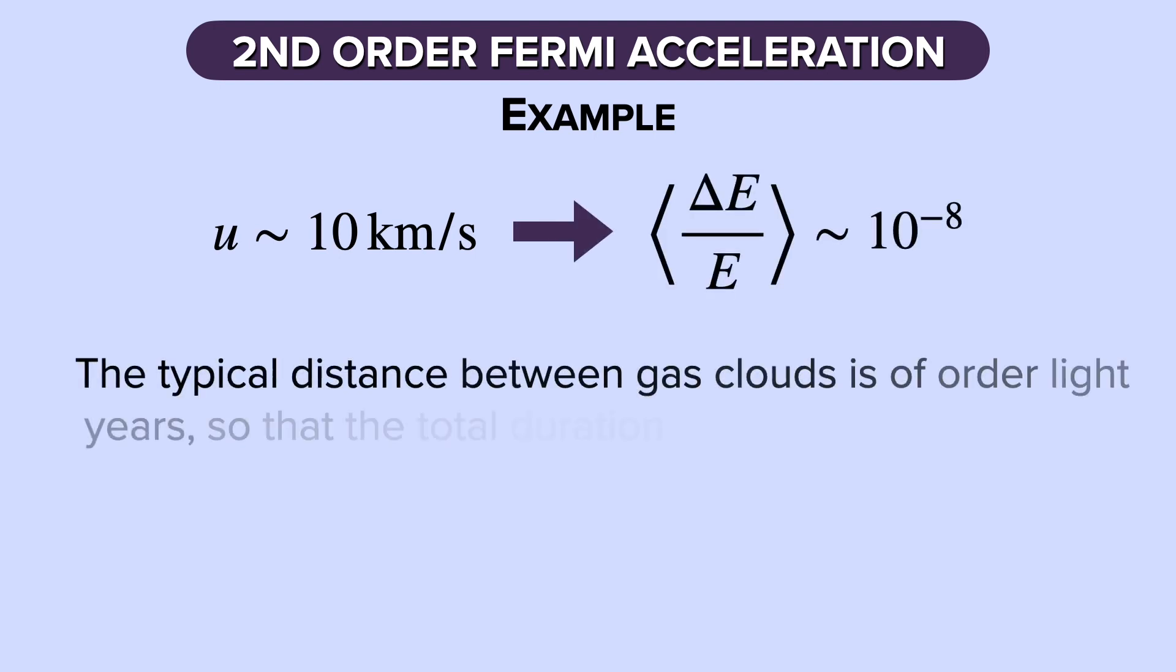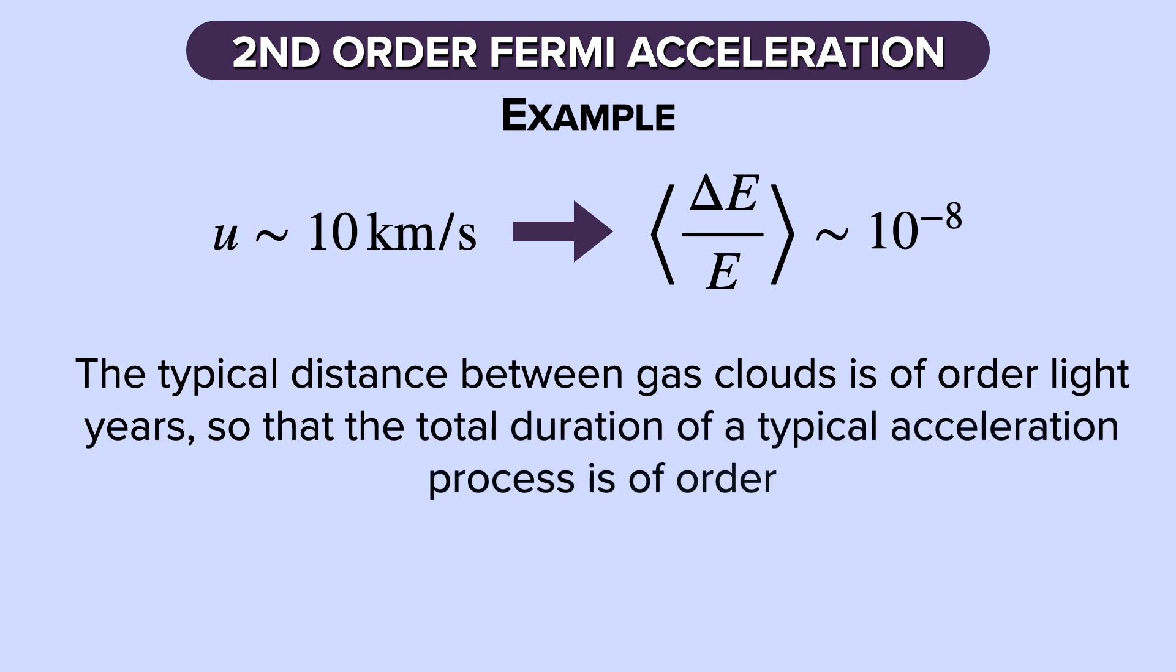Let's take a look at this example. Let's assume that we have a cloud that's moving with a velocity of 10 kilometers per second. That would mean that the energy gain is on the order of 10 to the minus 8. However, the typical distance between gas clouds is of the order of light years, so that the total duration of a typical acceleration process is of the order of 10 to the 8 years. That's a long time.